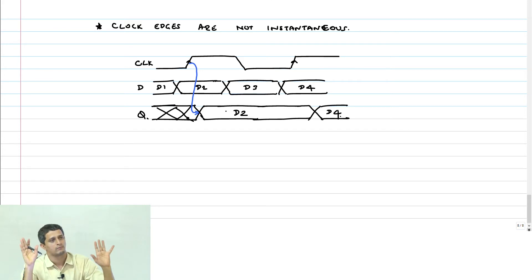What we will do is, this delay is TCD, data to clock, TDC. And what is this delay? TCDQ. Then there is another delay, which is basically the time from data to Q, Tdq.